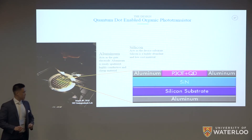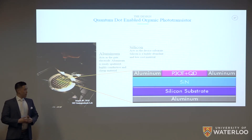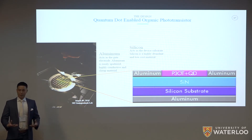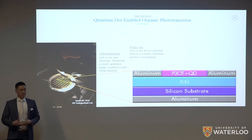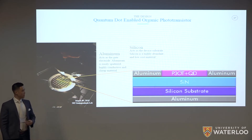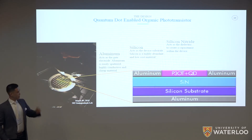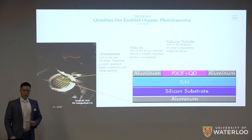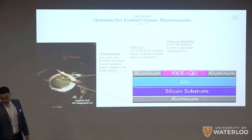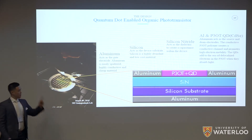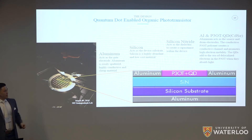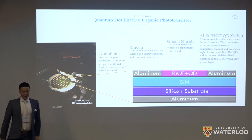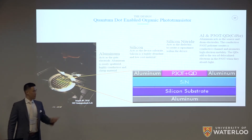Silicon is not organic, but our group is very comfortable using it in microfabrication processes, and since it is only a substrate, it's easily substitutable for an organic substrate in second-generation devices. The silicon nitride layer acts as a dielectric to create capacitance within the device. On the top layer we have aluminum source and drain electrodes, and in the middle is our special blend of P3OT polymer mixed with quantum dots.